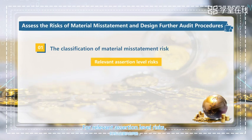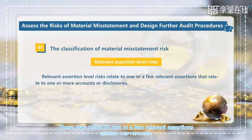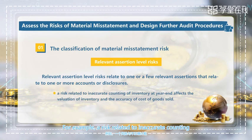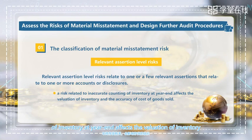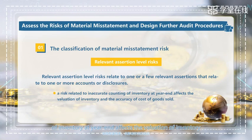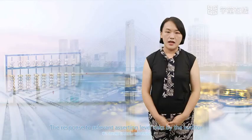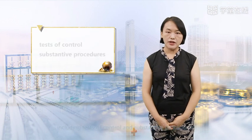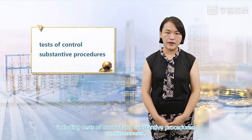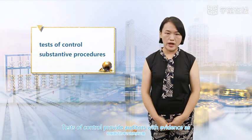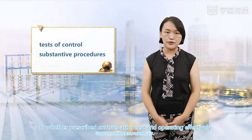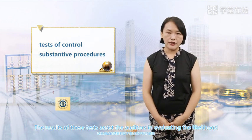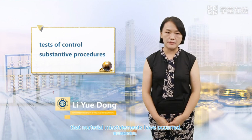For the relevant assertion level risk, this risk relates to one or a few relevant assertions that relate to one or more accounts or disclosures. For example, a risk related to inaccurate counting of inventory at year-end affects the valuation of inventory and the accuracy of cost of goods sold. The response to relevant assertion level risk by the auditor is to implement further audit procedures, including tests of controls and substantive procedures. Tests of controls provide auditors with evidence as to whether prescribed controls are in use and operating effectively.